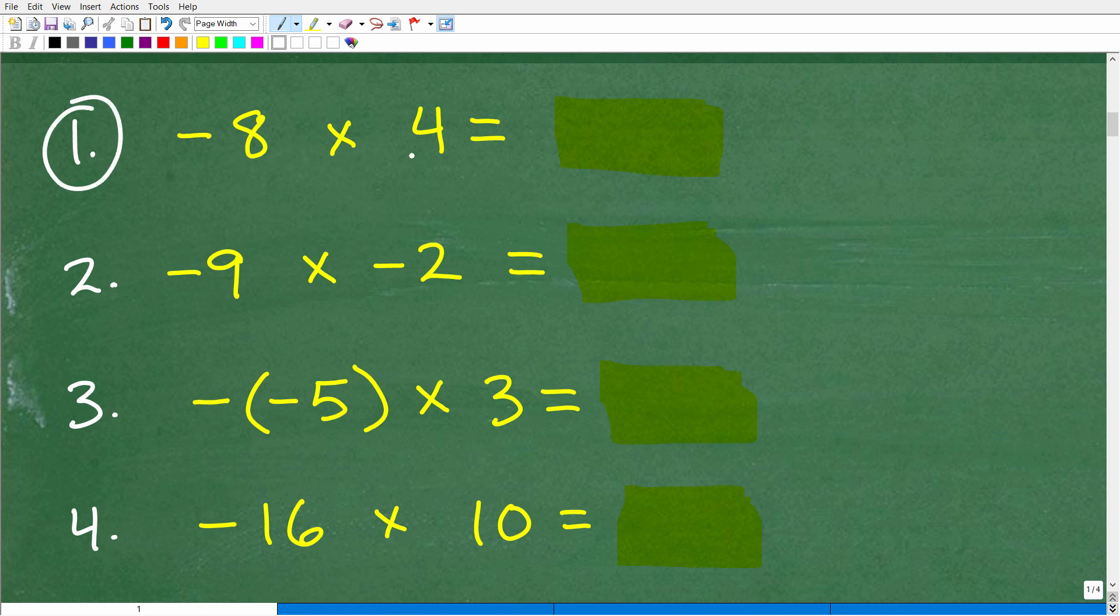So I have negative 8 times a positive 4. Are the signs the same or different? Well, they're different. Negative and a positive. So different signs mean the answer is going to be negative. So 4 times 8 is 32. So this is a negative 32.